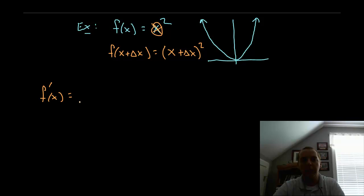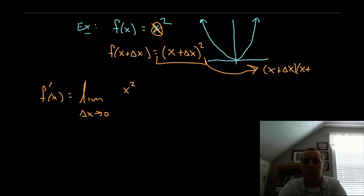So f prime of x will be the limit as delta x approaches 0. So if we take this quantity x plus delta x squared, and we go ahead and foil it and stick it in for f of x plus delta x, we'll have x squared, and you can see what this will be over here on the side. You have x plus delta x times x plus delta x. That's what x plus delta x squared means. We have x squared plus x delta x plus another x delta x. That makes 2x delta x. And then the quantity delta x squared for the last. And then minus, and we'll have x squared minus f of x all over delta x.